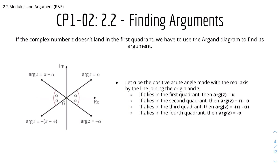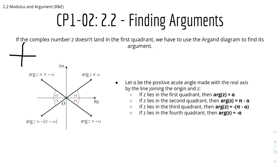Now we have how to find arguments. If the complex number z doesn't land in the first quadrant, then we have to use the Argand diagram to find its argument. Here's a quick recap of the quadrants: first, second, third, and fourth quadrant going anticlockwise. Let alpha be the positive acute angle made with the real axis by the line joining the origin and z. If z lies in the first quadrant, then the argument is just alpha, so arg z equals alpha.